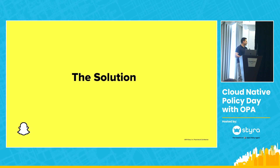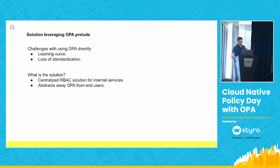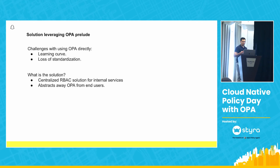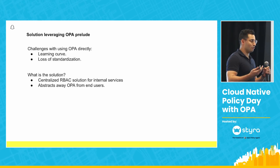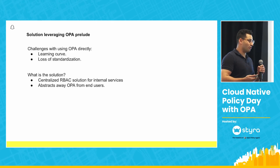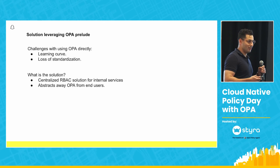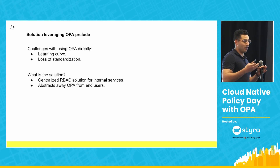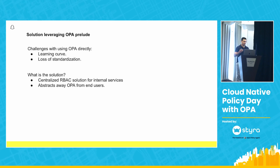Now I'll talk about the solution. We know we want to use OPA, we know the problem, and we know the goals. But we can't just get developers to straight up use OPA directly, because there's a learning curve — people have to get on board with Rego, and you want to deploy OPA in a way that doesn't hinder performance. People would not get on board if it decreased their performance, and we would not achieve our main goal of standardization. So we created a centralized RBAC solution for internal services by abstracting away OPA from end users, modeling our service on IAM roles from AWS to make it more intuitive.